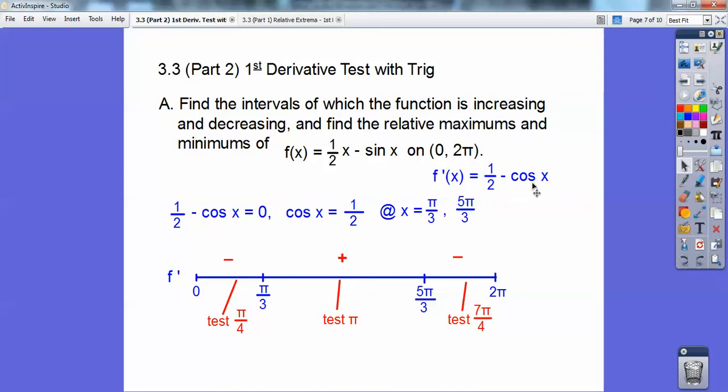Because cosine of pi is negative one, and one-half minus a negative one is positive. Okay, here I'm going to get another negative. Cosine of pi over four and cosine of seven pi over four are the same, root two over two.